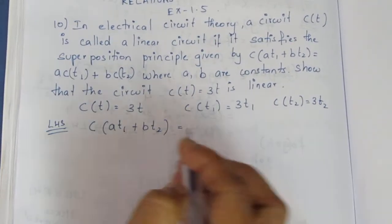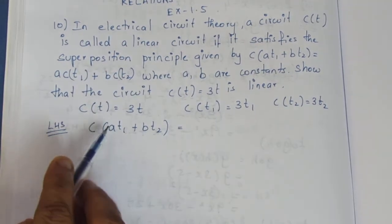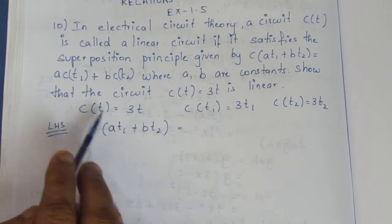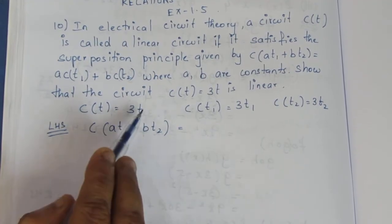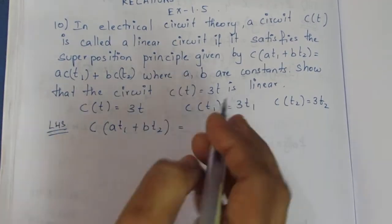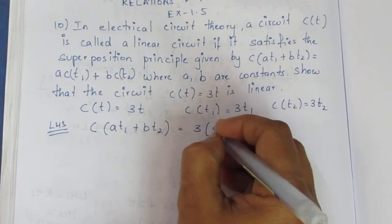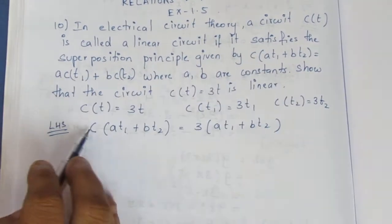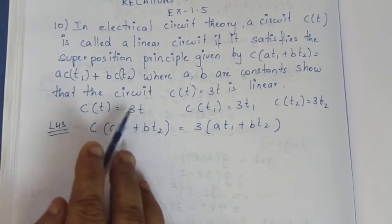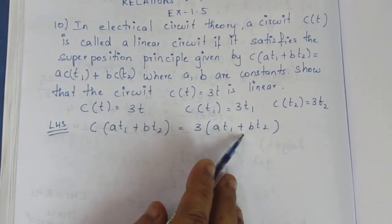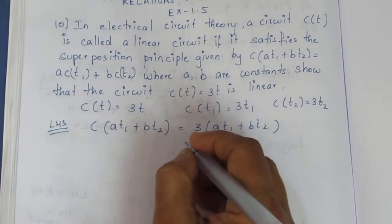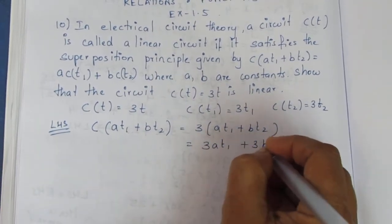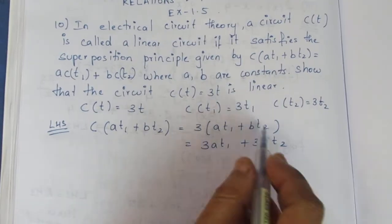This means if you have C of T, you can choose At1 plus Bt2. Then if you substitute t as At1 plus Bt2, then C of At1 plus Bt2 equals 3 into At1 plus Bt2.